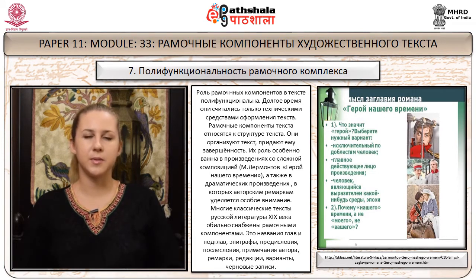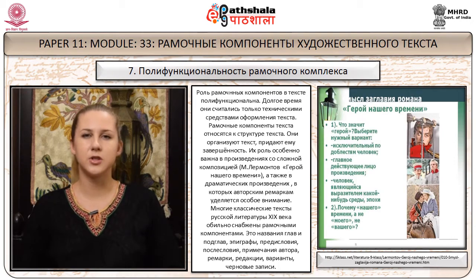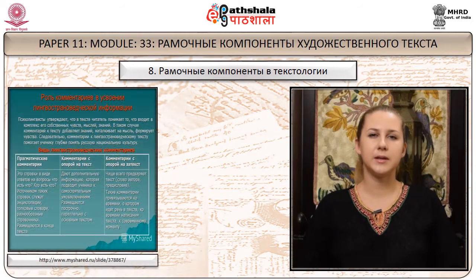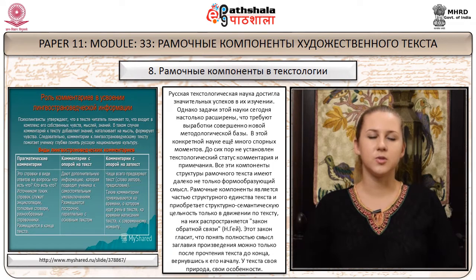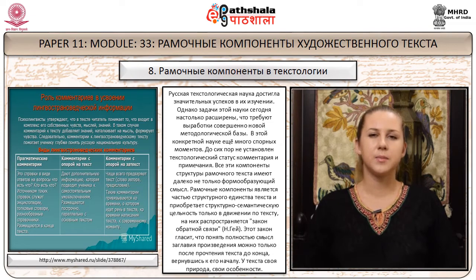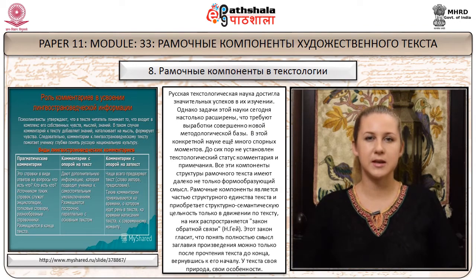К рамочным компонентам относятся названия глав и подглав, эпиграфы, предисловия, послесловия, примечания автора, ремарки, редакции, варианты, черновые записи. Русская текстологическая наука достигла значительных успехов в их изучении, однако задачи этой науки требуют выработки новой методологической базы. До сих пор не установлен текстологический статус комментария и примечания. Все эти компоненты структуры рамочного текста имеют далеко не только формообразующий смысл. Рамочные компоненты приобретают структурно-семантическую цельность только в движении по тексту.